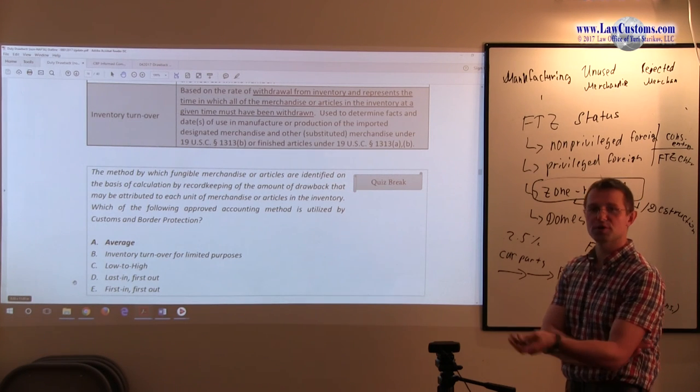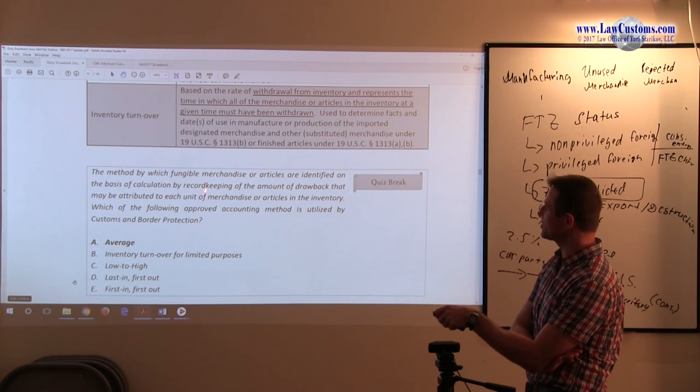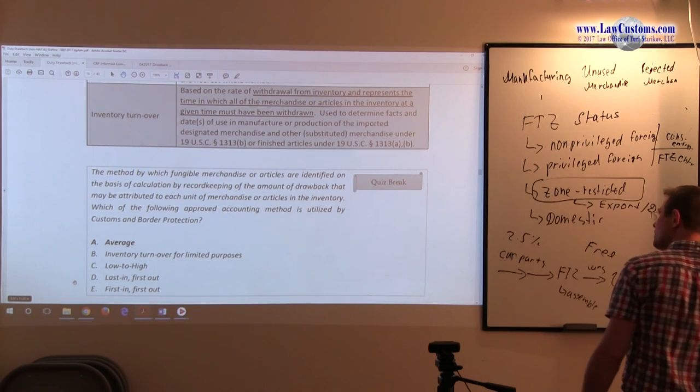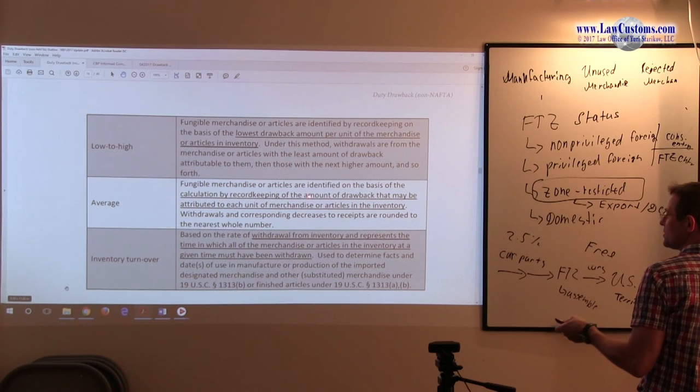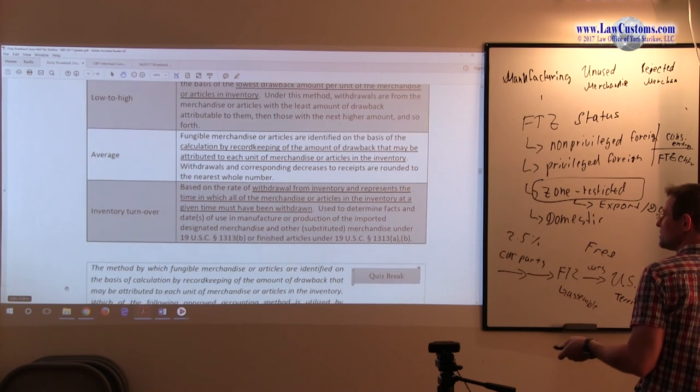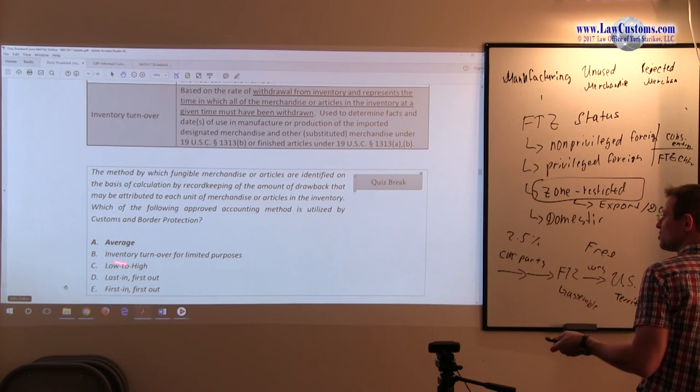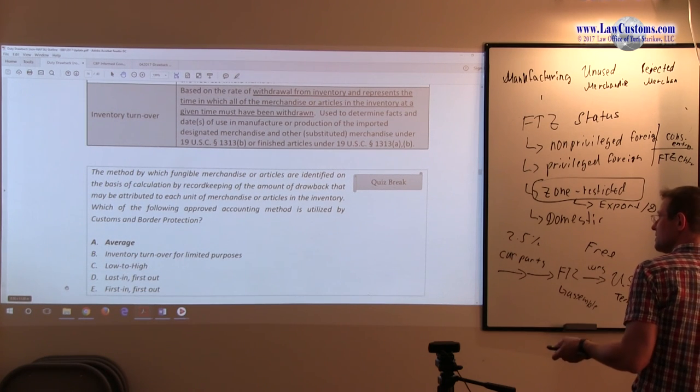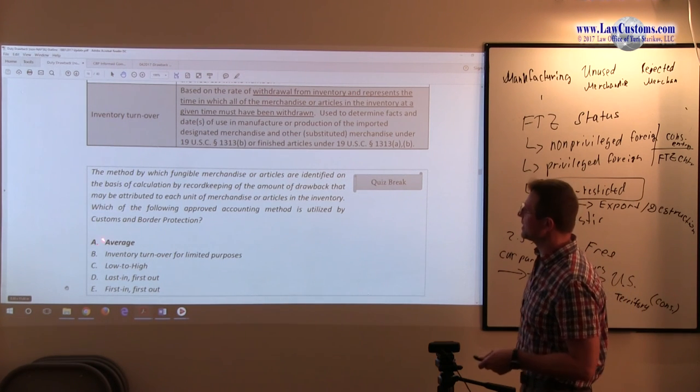Attribution is the proportion to each unit, so you can immediately relate this to the average method. Calculation of drawback attributed to each unit of merchandise in inventory relates to the average methodology. You can pick A as the correct answer choice.